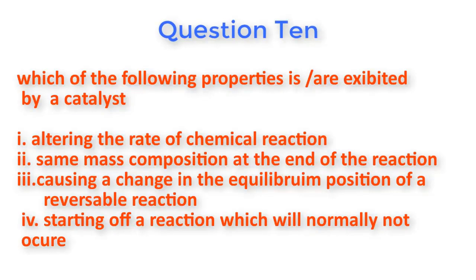Question number ten: Which of the following properties is or are exhibited by catalysts? One: Altering the rate of chemical reaction. Two: Same mass composition at the end of the reaction. Three: Causing a change in the equilibrium position of a reversible reaction. Four: Starting off a reaction which will normally not occur.